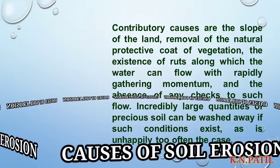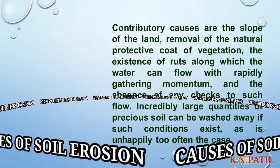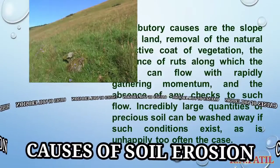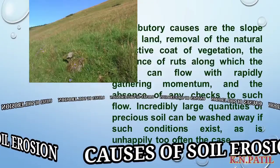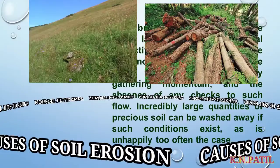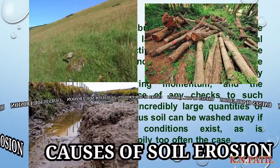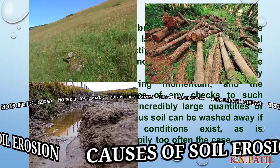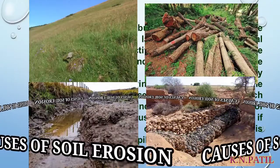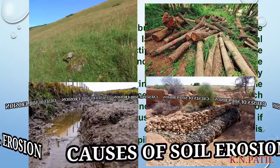In this paragraph, Sir C.V. Raman is giving some other causes for soil erosion. These contributory causes include: the slope of the land, removal of the natural protective coat of vegetation — meaning forests — the existence of ruts along which water can flow with rapidly gathering momentum, and the absence of any checks to such flow. Because of these causes, very large quantities of precious soil can be washed away from the surface.